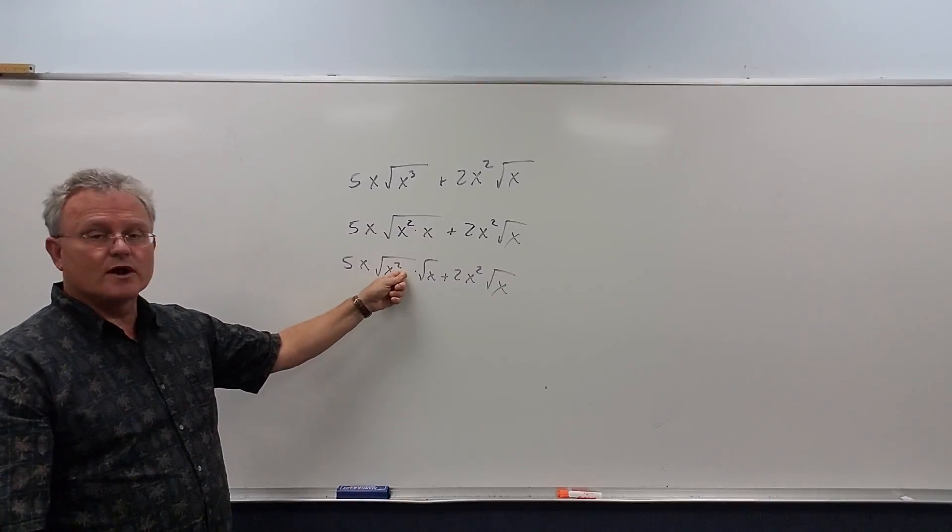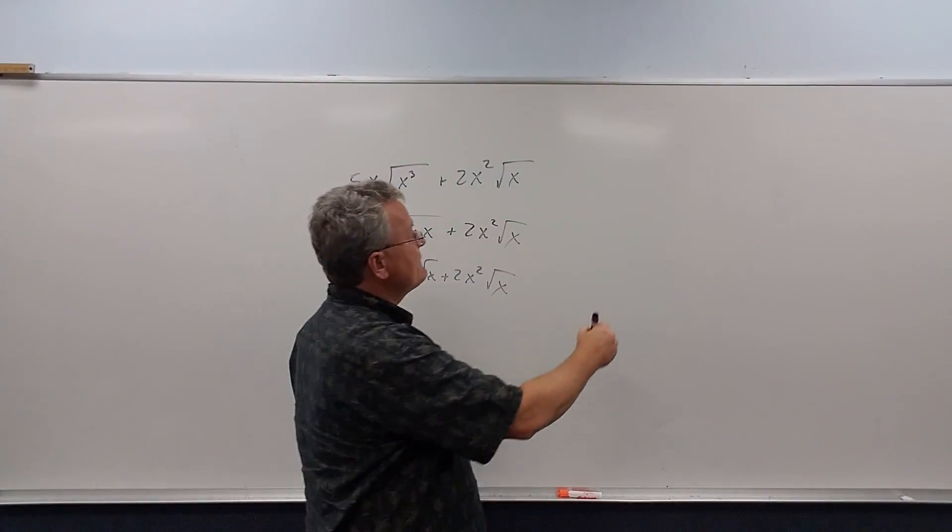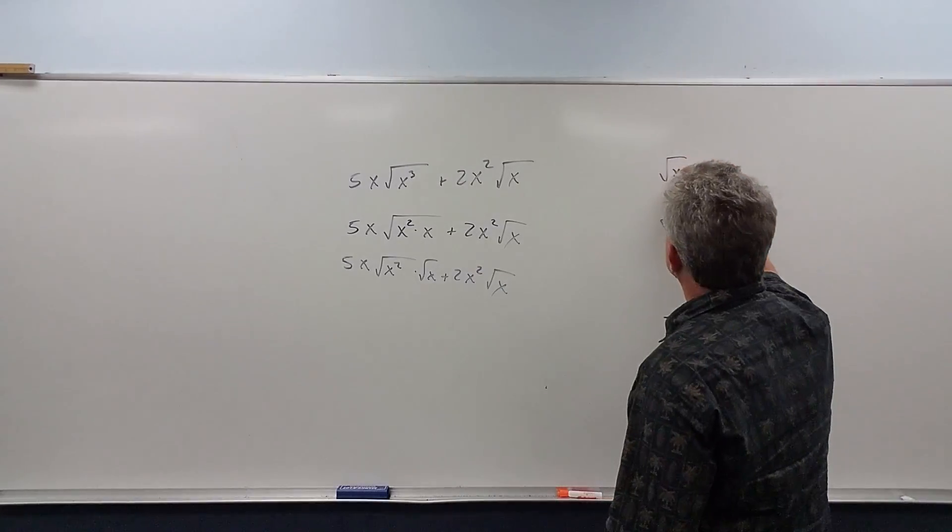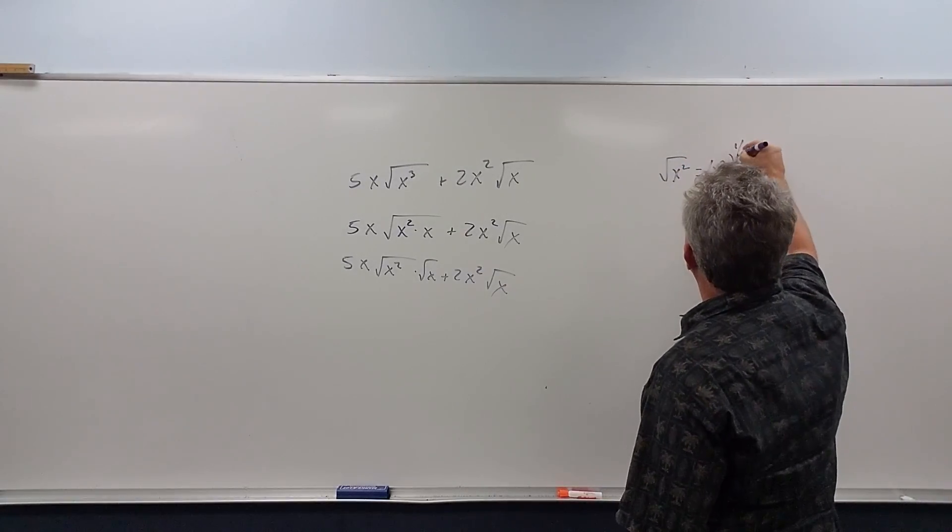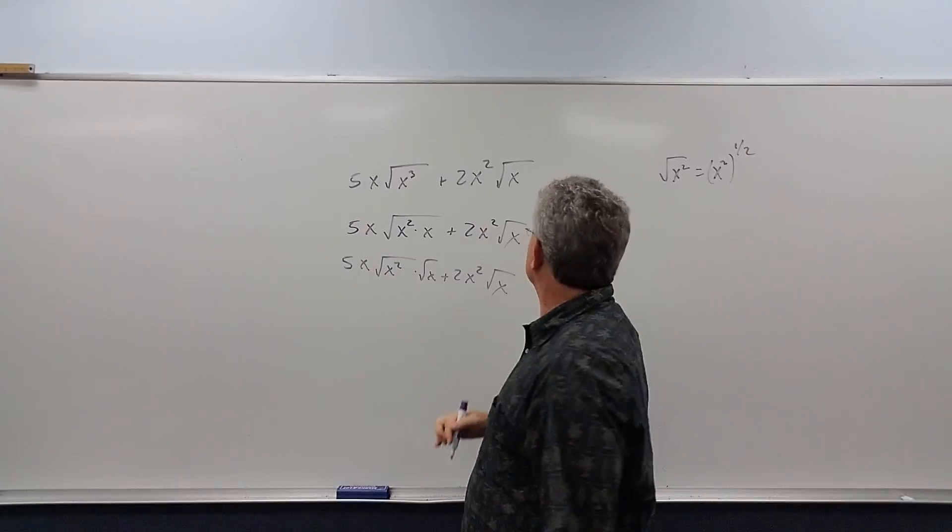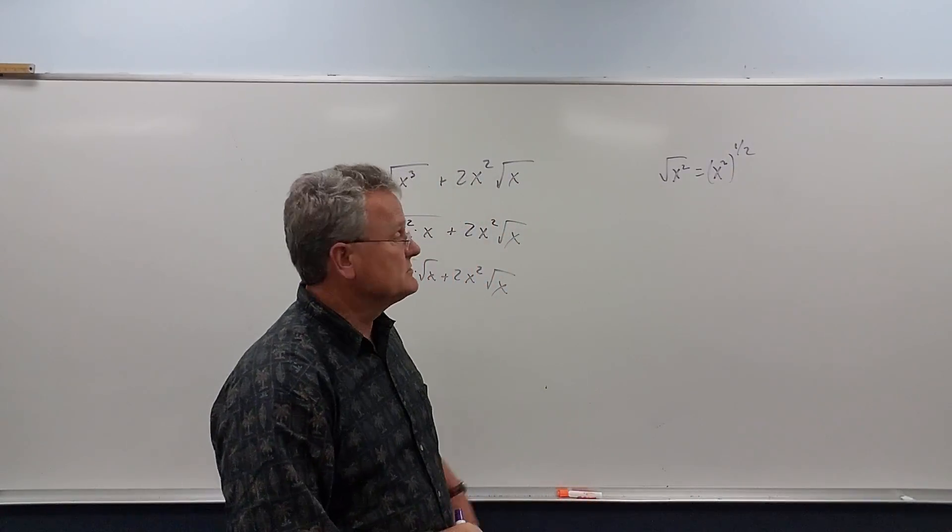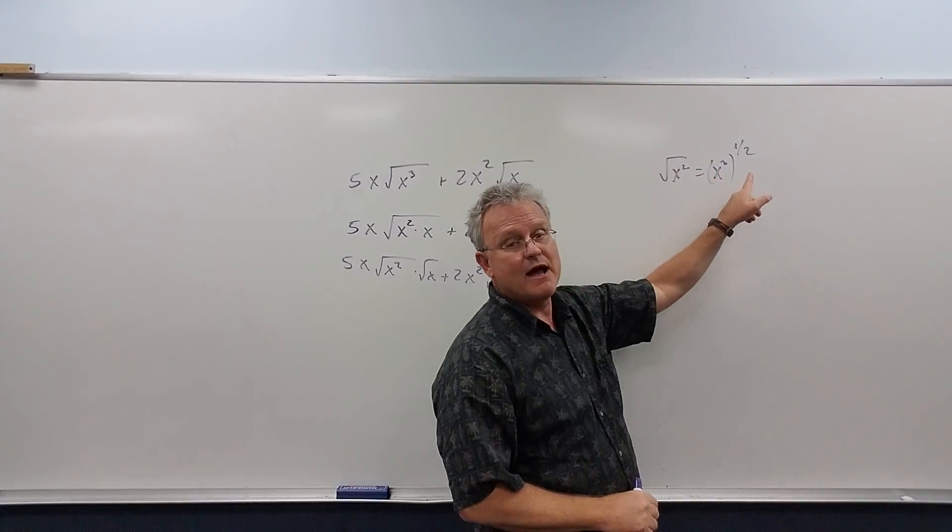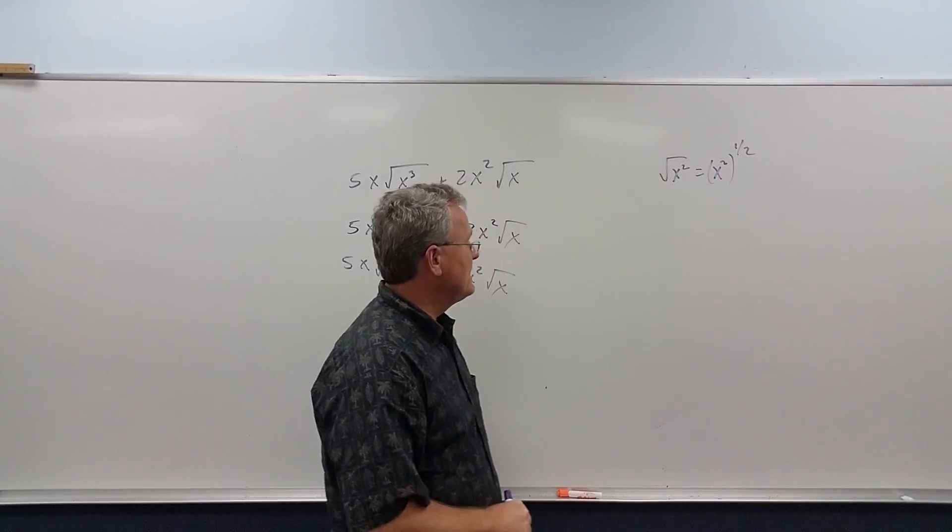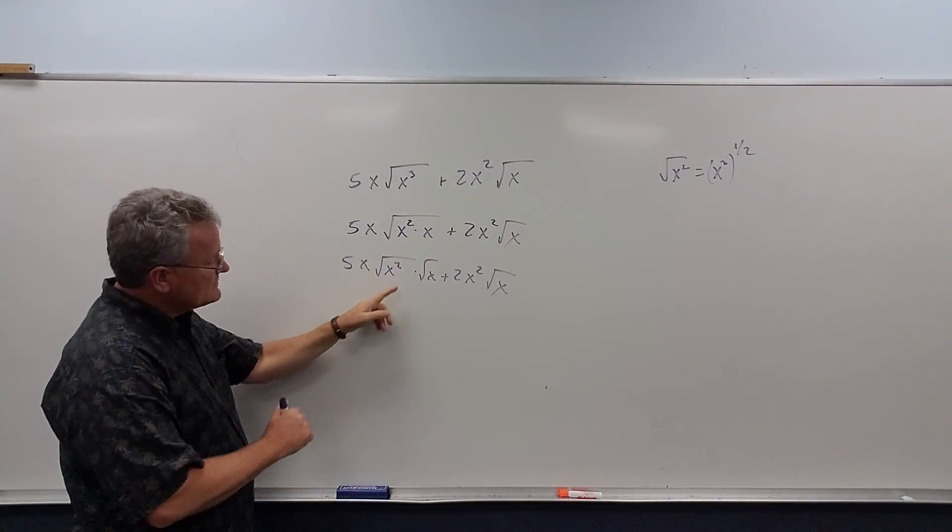Now, what is the square root of x squared? Well, the square root of x squared is the same as x squared to the half power, so we divide when we multiply the exponents here. It's our rule of exponents. Multiplying by a half is the same as dividing by 2, so we divide the exponent by 2.